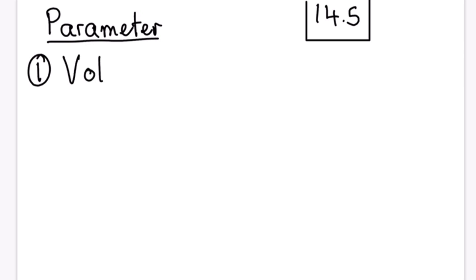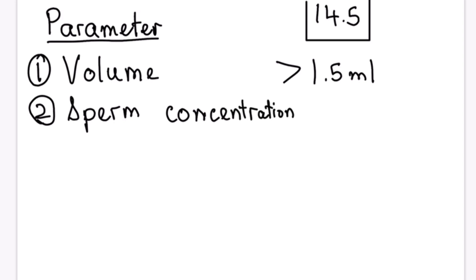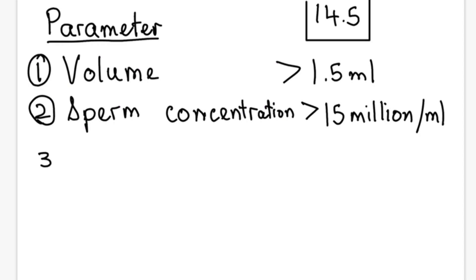The first parameter is volume, which must be greater than 1.5 ml — note the 1.5 from our number 14.5. The second parameter is sperm concentration, which must be more than 15 million per ml — again, the 15 comes from 14.5.